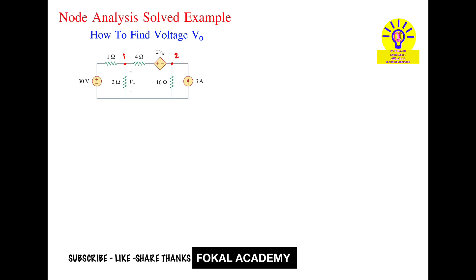Let's consider this is node 1 and this is node 2. Now first of all, what is node analysis? In node analysis, at the node point, we are going to use KCL — that means the sum of all incoming currents at this node point is equal to zero. We are going to write current values.